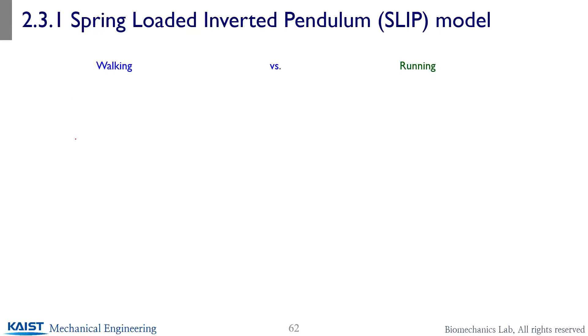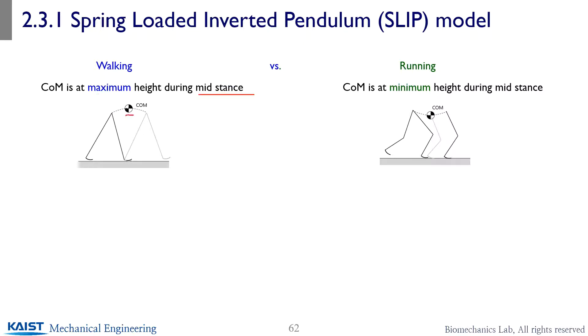Okay, so when I learned locomotion when I was a grad student, I learned the walking and running as two different mechanisms, like at the mid stance, the walking has a maximum height for the center mass like this, and for running due to the bent knee, center mass are at the minimum position during the mid stance. So it seems like two very different mechanisms.